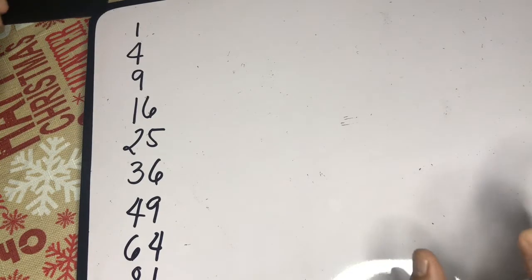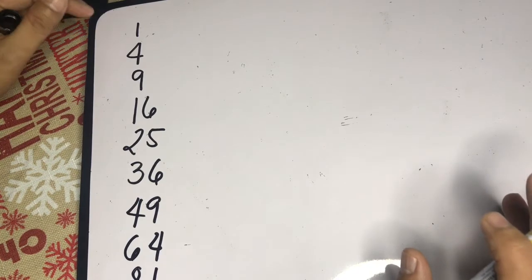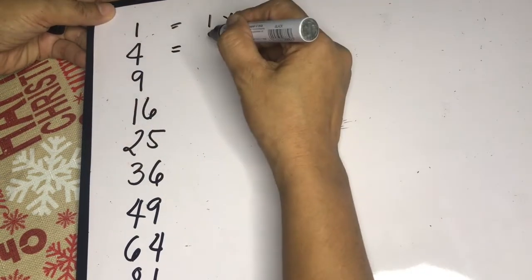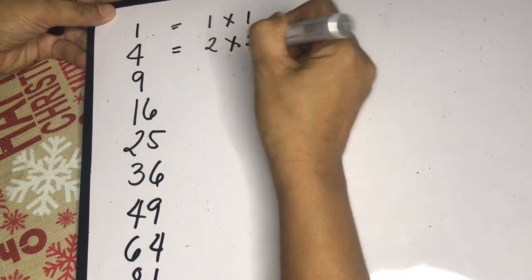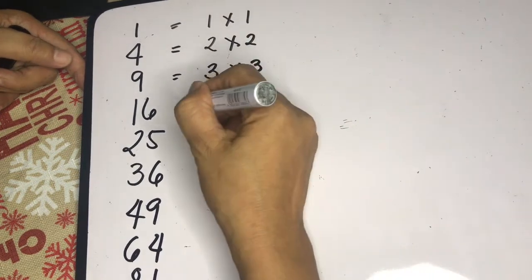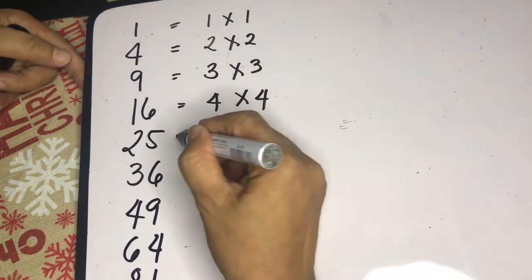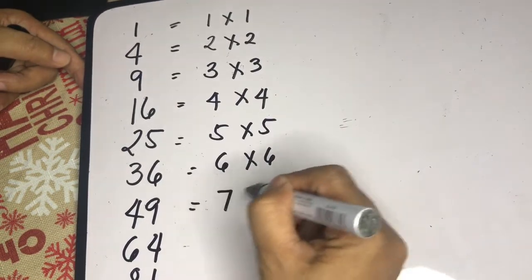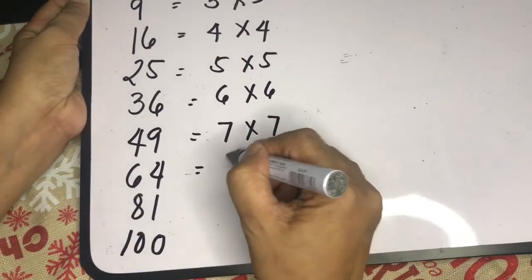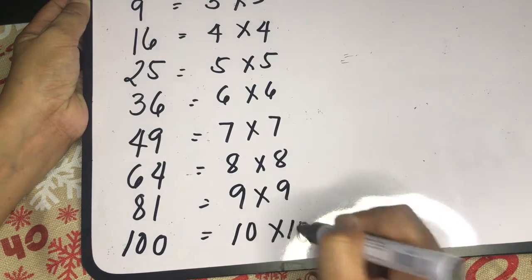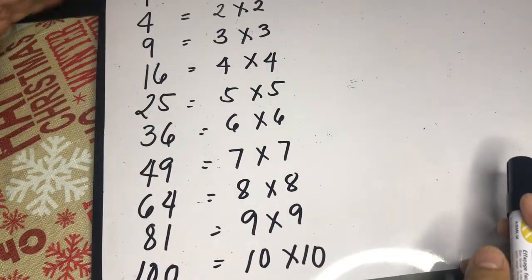Why are they perfect squares? If you look at the factors of these numbers, we multiply the root by itself. For example, 1 is 1 times 1. For 4, the root is 2, so 2 times 2 equals 4. For 9, we have 3 times 3. For 16, 4 times 4. For 25, 5 times 5. Then 6 times 6, 7 times 7, 8 times 8, 9 times 9, and 10 times 10. We call these perfect square numbers.